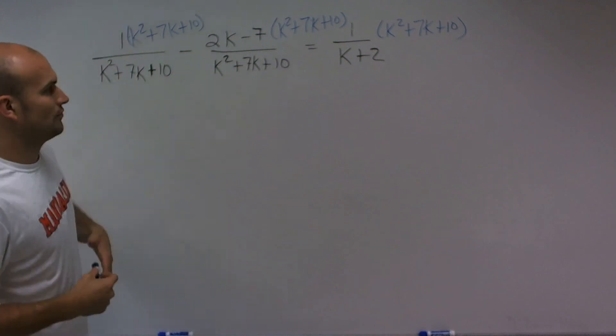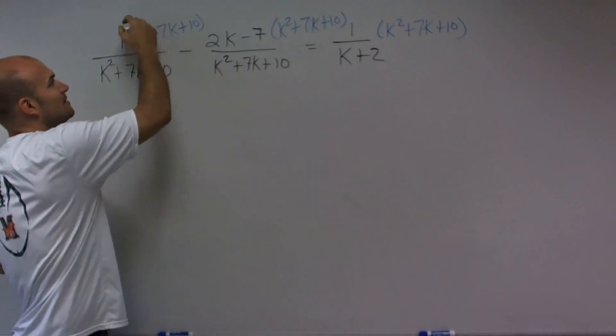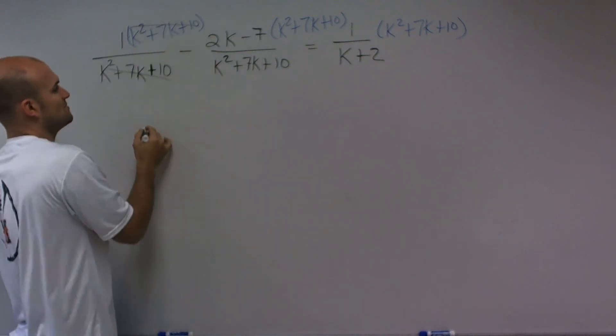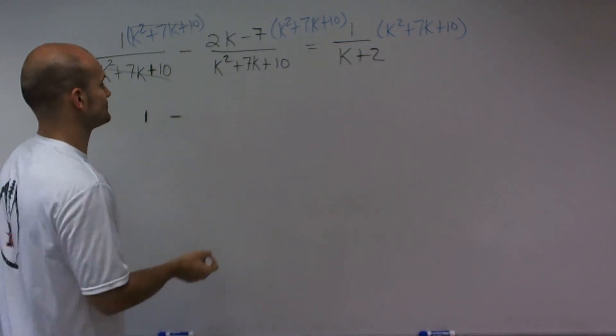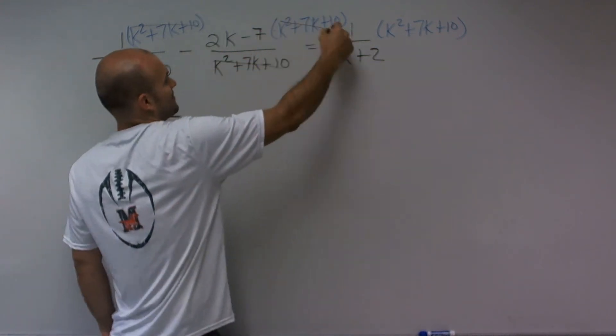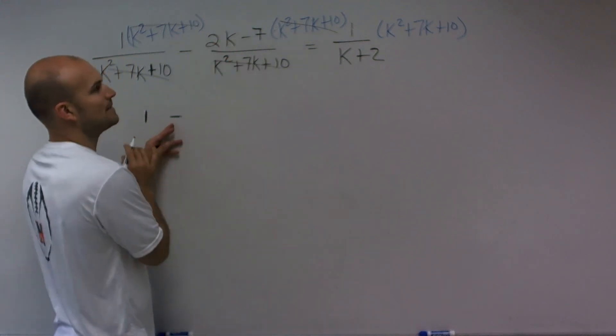So now let's just go through it. Well, k squared plus 7k plus 10 divided by the same is just going to go to 1. 1 times 1 is 1 minus k squared. Again, the same thing is happening. So that's just going to go to 1. But remember, so now I'm just going to have 2k minus 7.